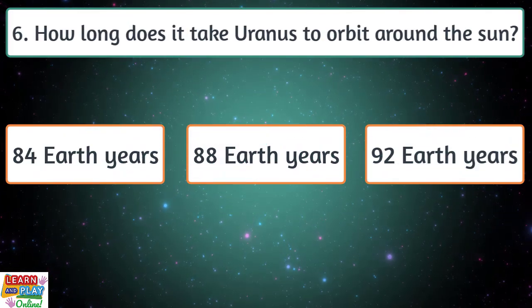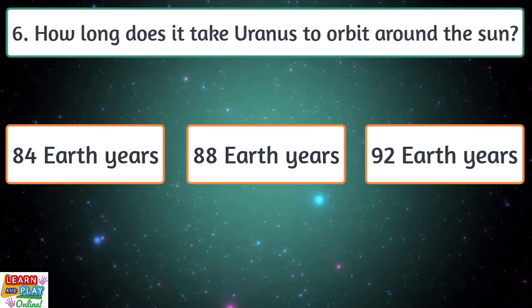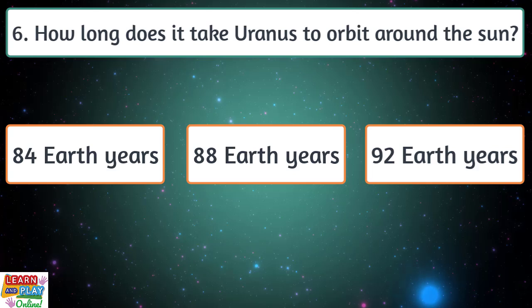Question 6. How long does it take Uranus to orbit around the sun? 84 Earth years, 88 Earth years, or 92 Earth years?